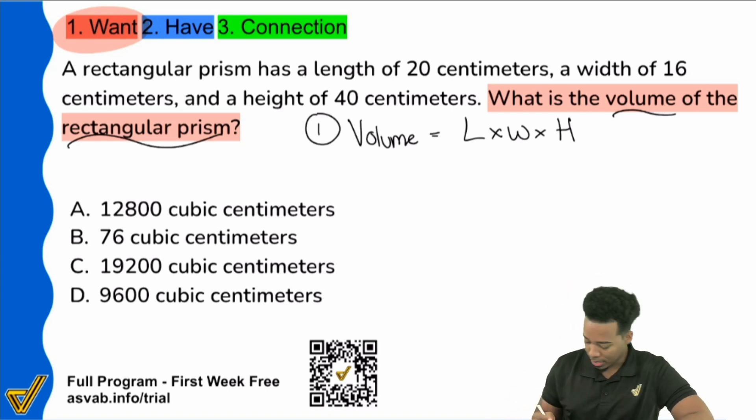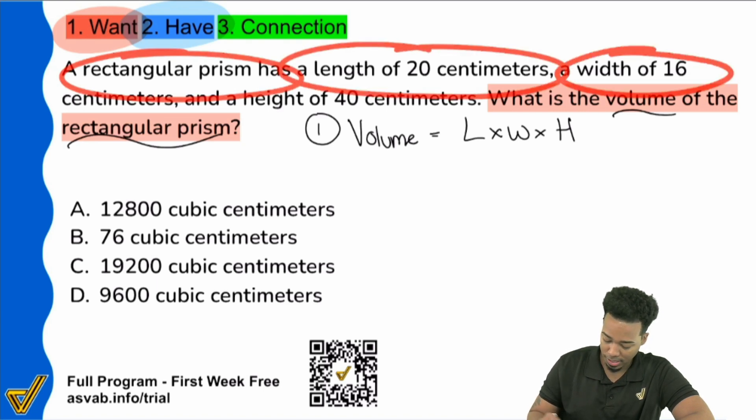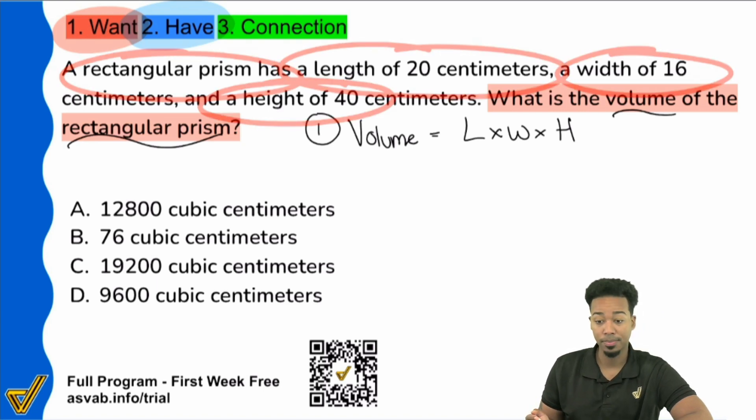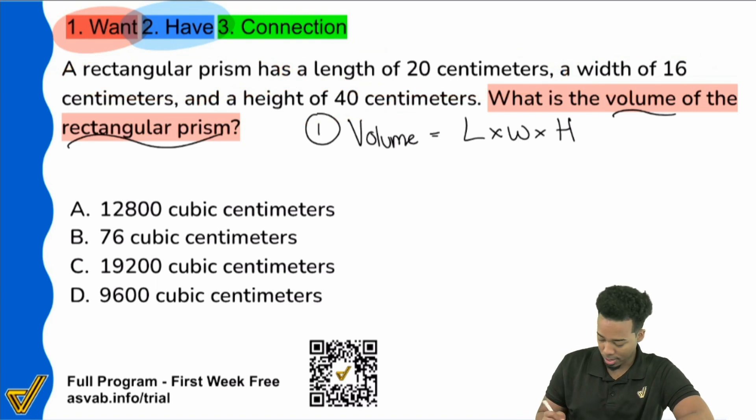All right, so let's go ahead and get to it here. Let's go ahead and plug in or find the information that we have. What do we have? So here it says a rectangular prism has a length of 20, width of 16, and a height of 40. So seeing all that information, great. That's awesome. Length is 20, width is 16, height 40. And I'm going to plug that height on in. Length 20, width 16, and the height is 40.